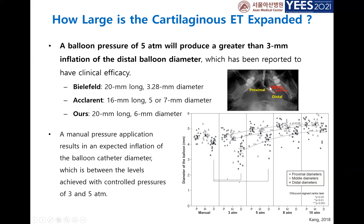We measured the diameter of the cartilage and balloon at the proximal and distal portions. The distal portion was dilated slightly smaller, likely because the eustachian tube is naturally narrower distally compared to the proximal nasopharyngeal portion. When we applied five atmospheres and increased the pressure, we could see larger dilation. At only three atmospheres it was sufficient, dilating more than 3 millimeters — the European company uses 3.3 mm diameter and has shown good results. So the diameter of currently available systems is adequate.